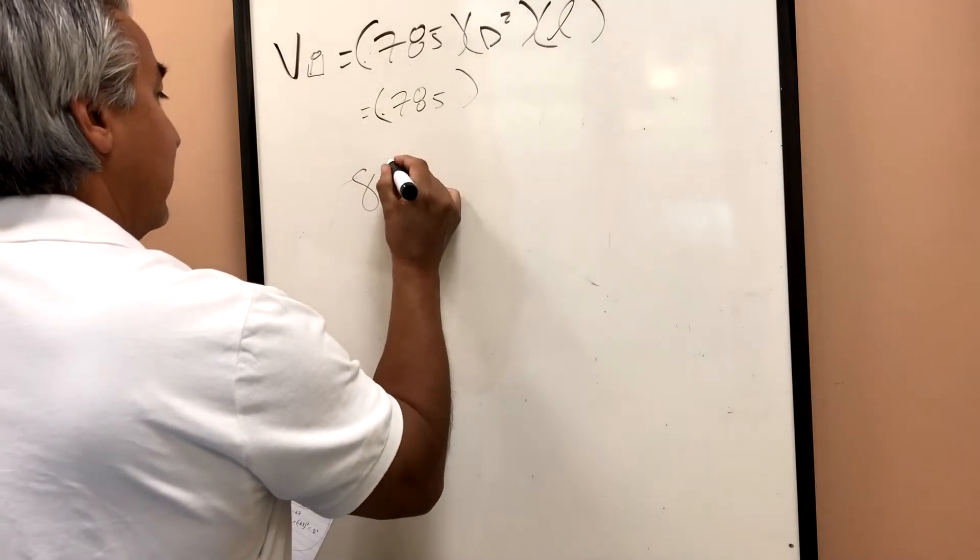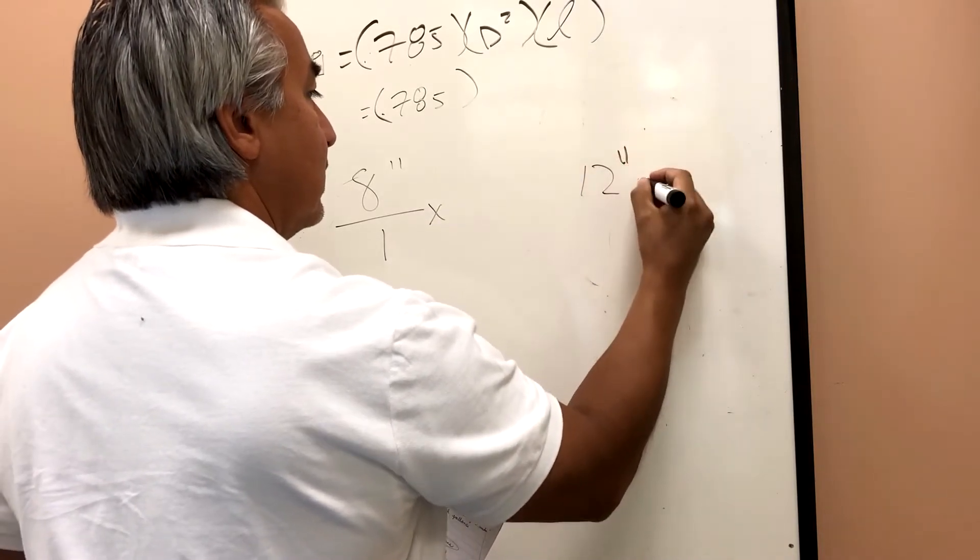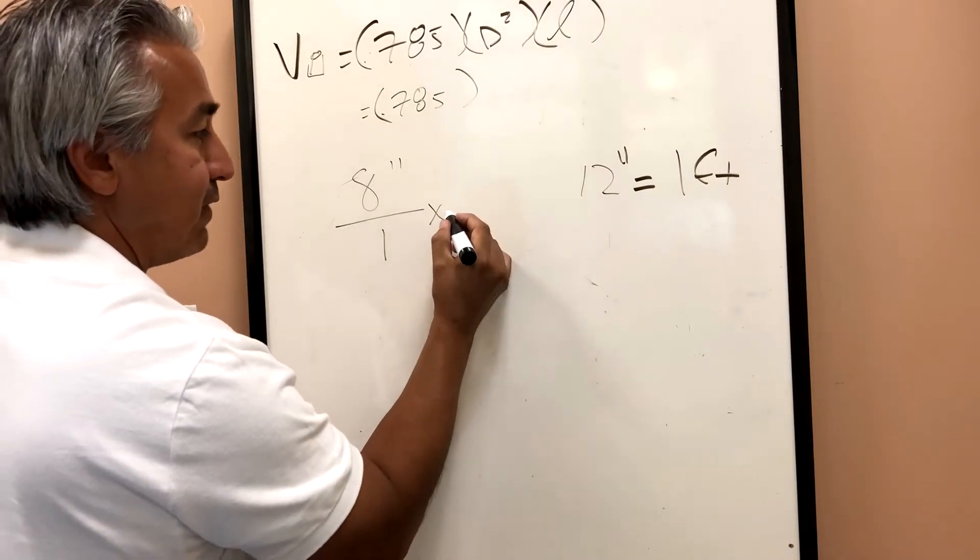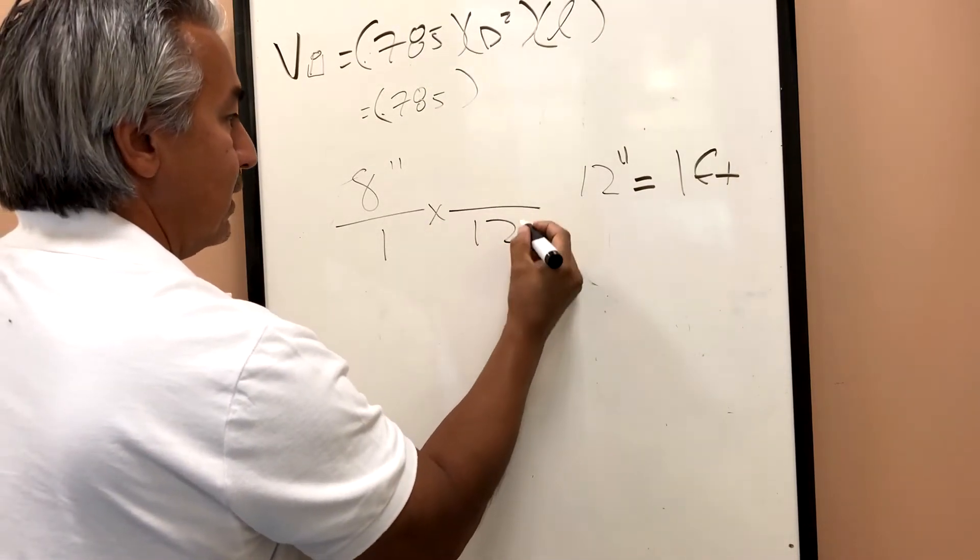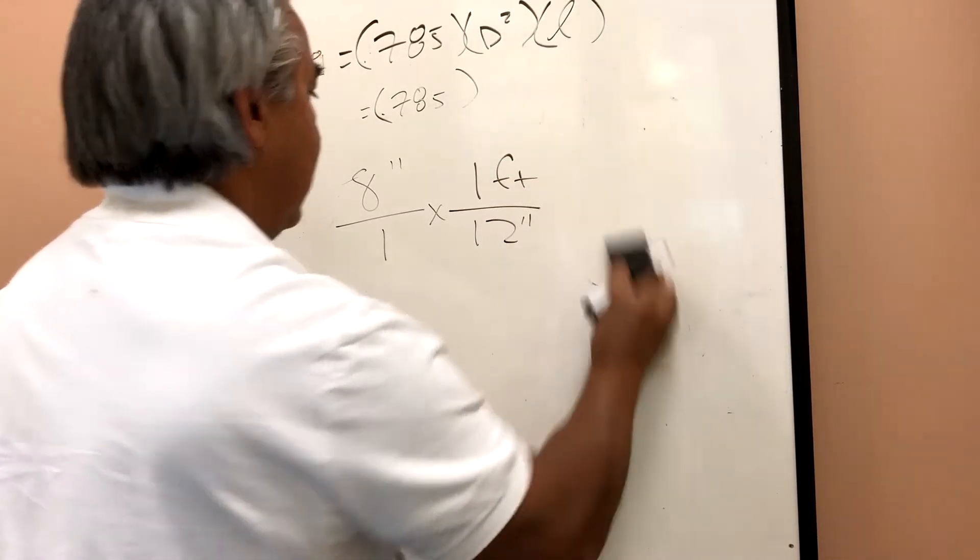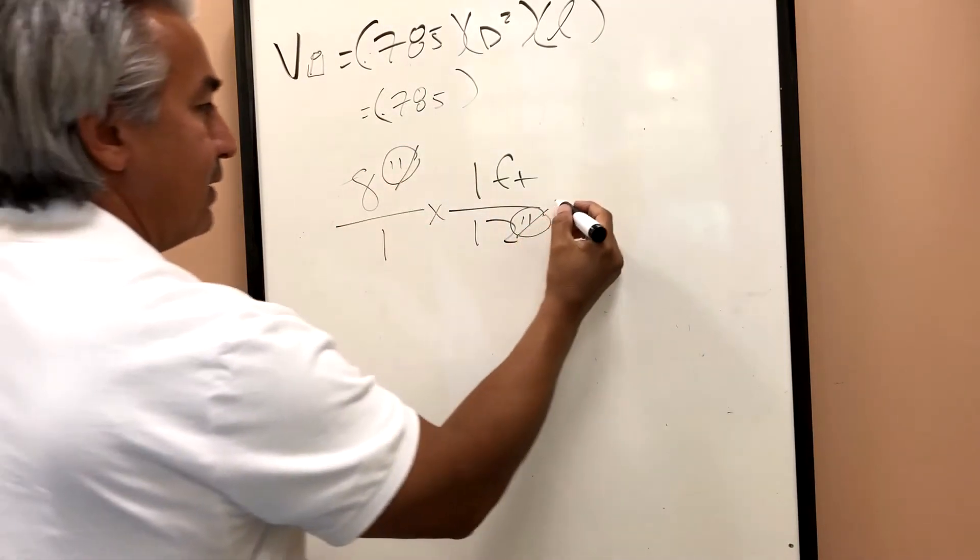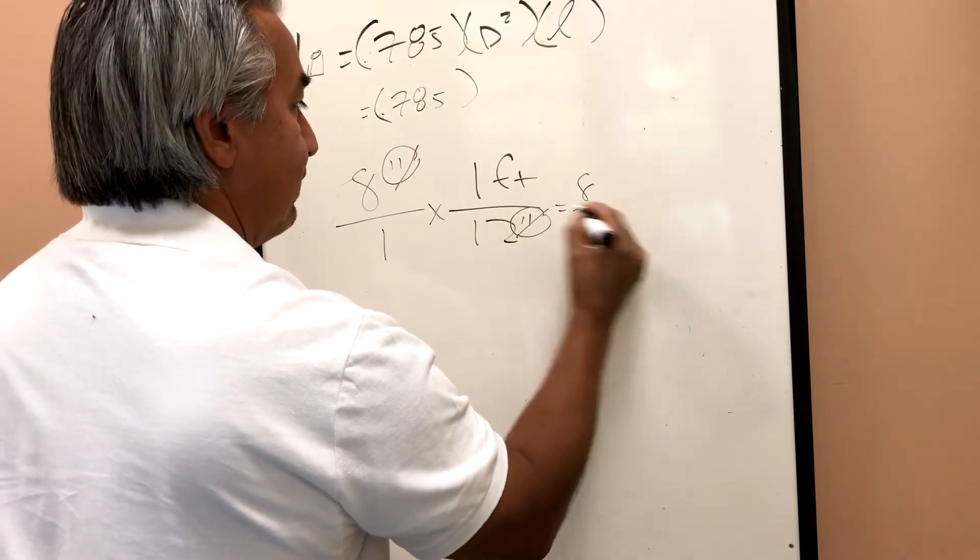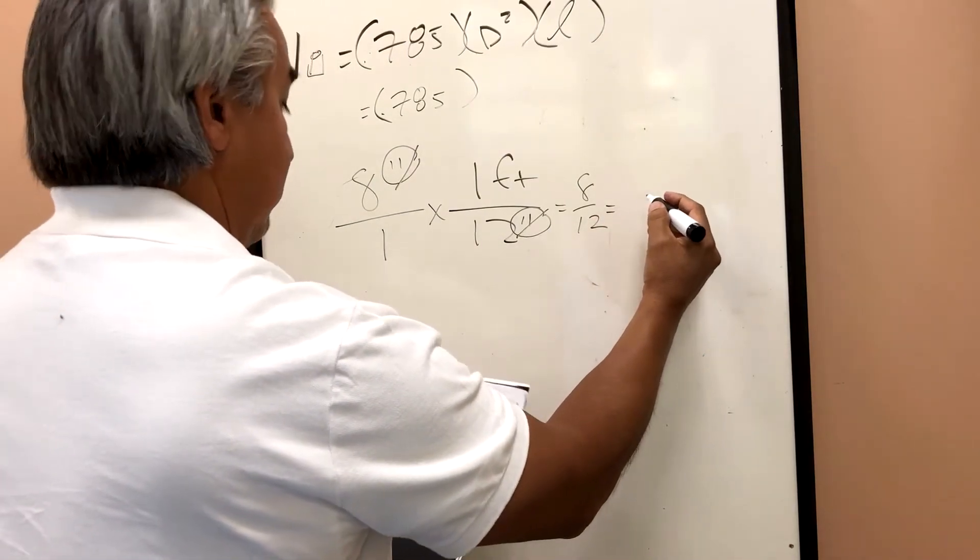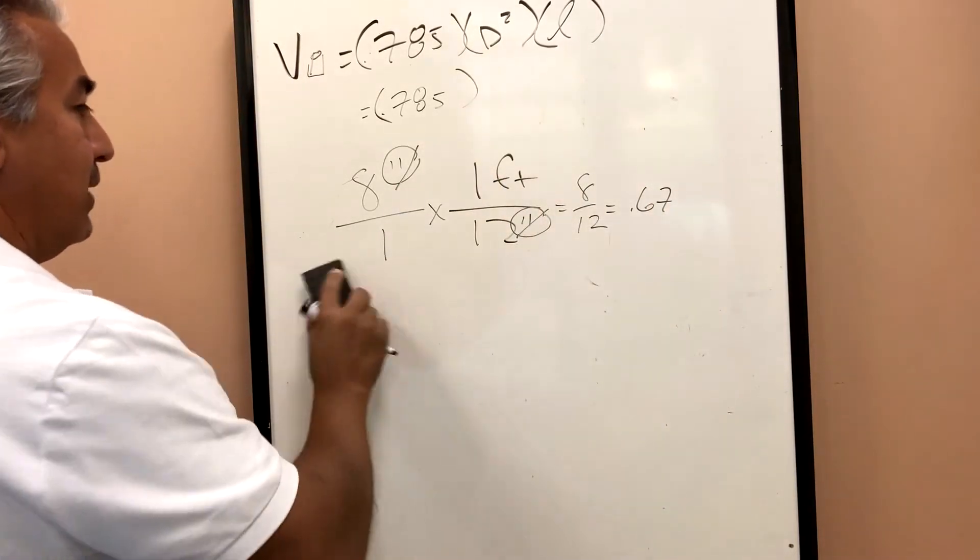Okay. So it's eight inches over one. And we know that there are 12 inches to one foot. So I'm going to multiply by that fraction. Now my inches are going to cancel out and I'm left with eight divided by 12 and our units of measure that are left are feet, which is 0.67.